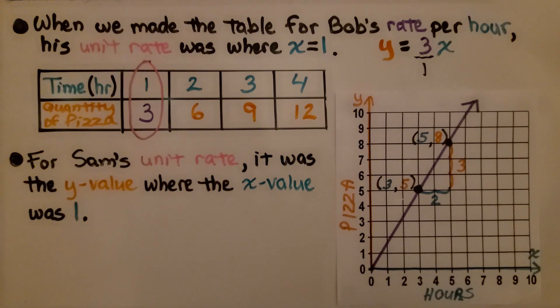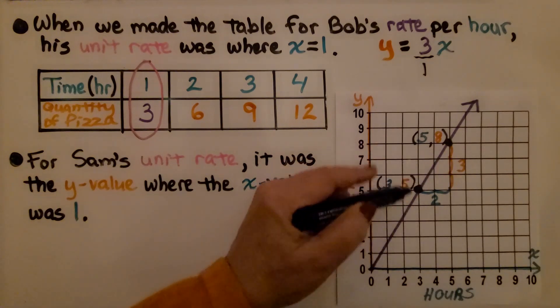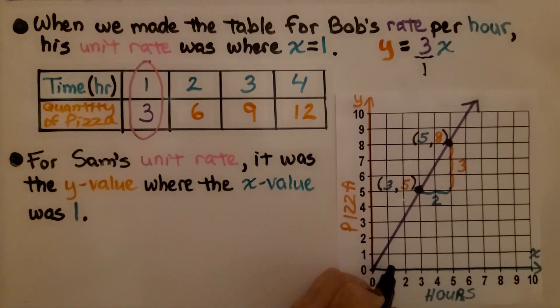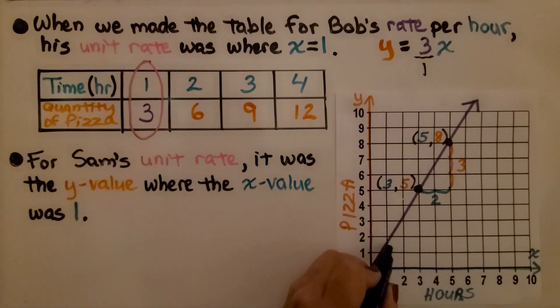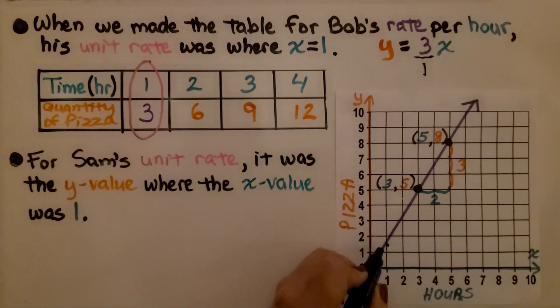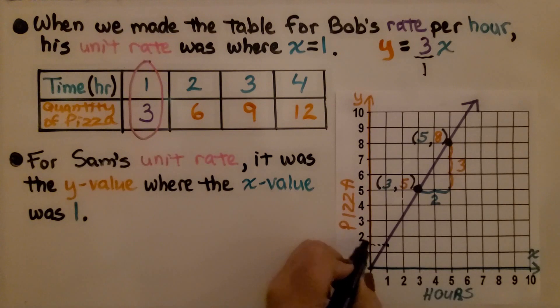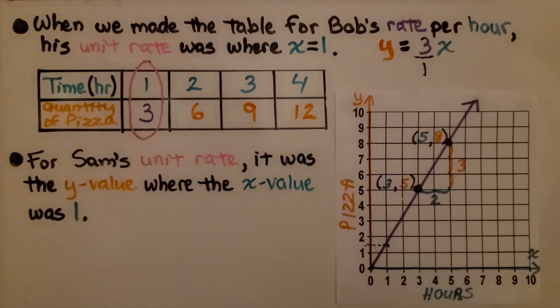For Sam's unit rate, it was the y value where the x value was 1. Here we have our line and we look at where x is a 1 and we see where it hits the y value. It hits it right here at 1 and a half. Bob's rate per hour was 3 and Sam's was 1 and a half per hour.